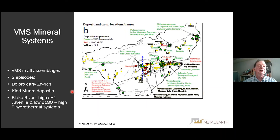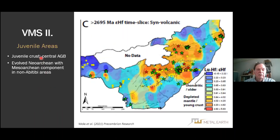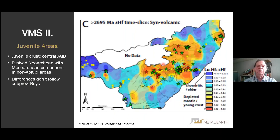There are three major episodes of development of VMS. During the Deloro time at 2730 Ma there are early zinc-rich deposits. When we get down to Blake River time at basically 2.7 Ga, we have high epsilon-hafnium — juvenile — and low delta-18 oxygen, which indicates high-temperature hydrothermal systems. So juvenile crust in the central Abitibi, and evolved Neo-Archean with a Meso-Archean component in non-Abitibi areas.